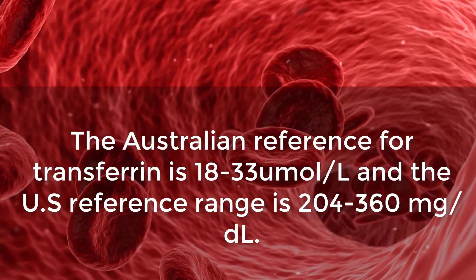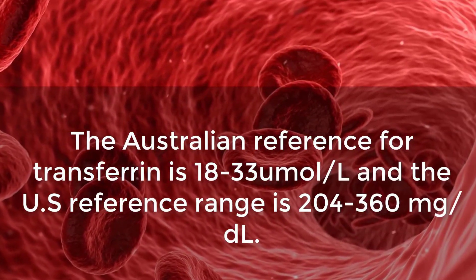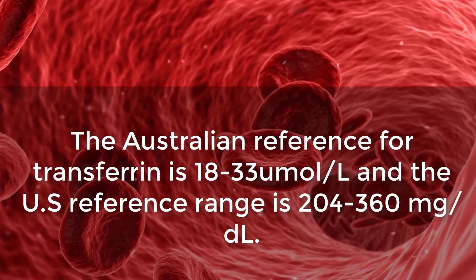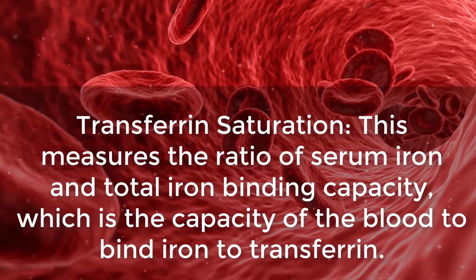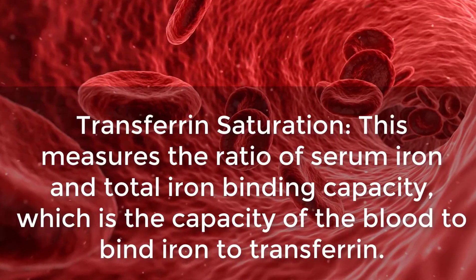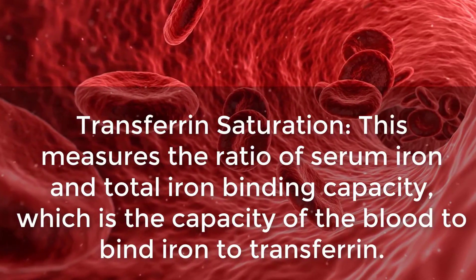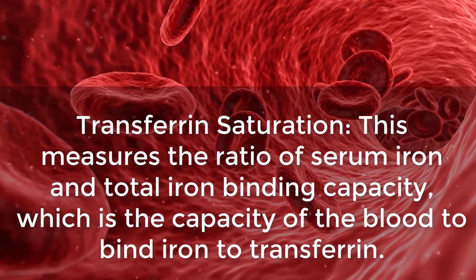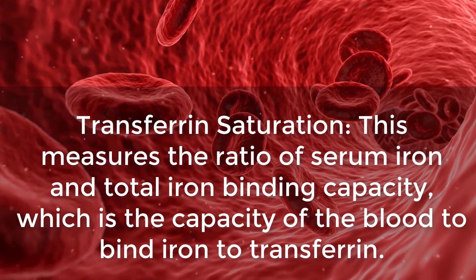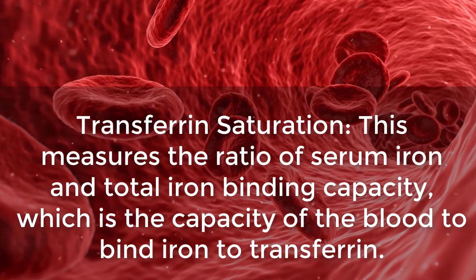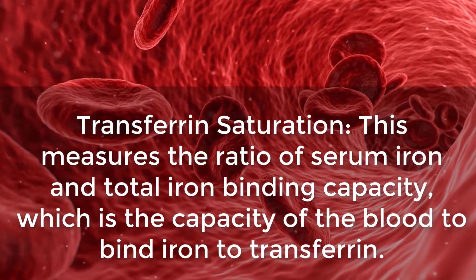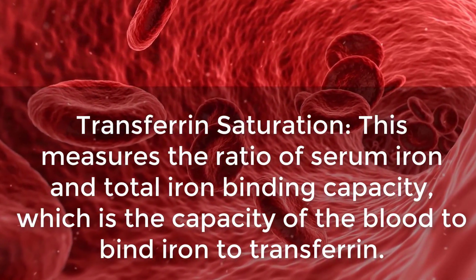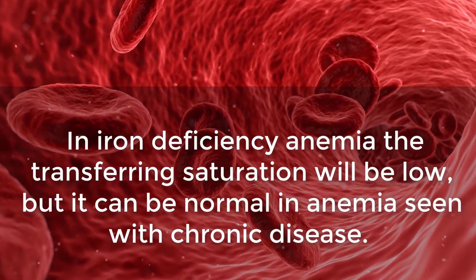The Australian reference for transferrin is 18 to 33 micromoles per liter, and the US reference range is 204 to 360 milligrams per deciliter. Transferrin saturation measures the ratio of serum iron and total iron binding capacity, which is the capacity of the blood to bind iron to transferrin. In iron deficiency anemia, the transferrin saturation will be low.